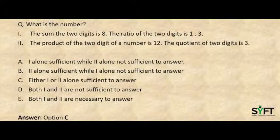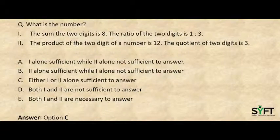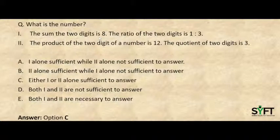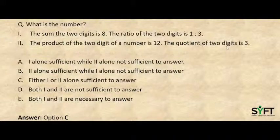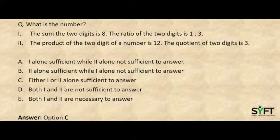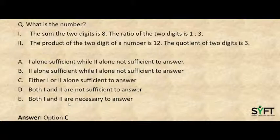The next question asks: what is the number? We need not find the number itself — this is a data sufficiency question. We need to find which statement is required to determine the number. Statement 1 says the sum of the two digits is 8 and the ratio of the same two digits is 1:3. Statement 2 says the product of the two digits of a number is 12 and the quotient of the two digits is 3. The options are: 1 alone is sufficient while 2 alone is not; 2 alone is sufficient while 1 alone is not; either 1 or 2 alone is sufficient; both 1 and 2 are not sufficient; or both 1 and 2 are necessary to answer.